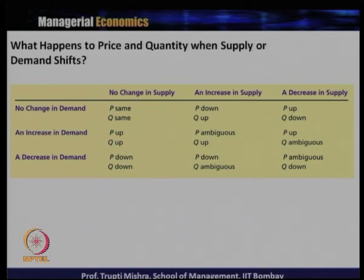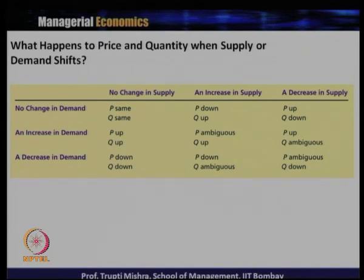When there is an increase in supply and decrease in demand, P decreases and Q remains ambiguous. With no change in demand and a decrease in supply, P is increasing and Q is decreasing. When there is a decrease in supply and increase in demand, we can only predict P — P is increasing and there is ambiguity regarding the change in Q. In the last case, decrease in supply with decrease in demand leads to ambiguity for the change of P, but Q generally decreases. To summarize: when both demand and supply are changing, either we can predict price or quantity, but not both; the other variable remains ambiguous. When only one market force changes, we can predict both price and quantity.